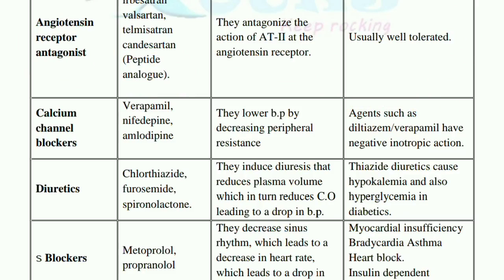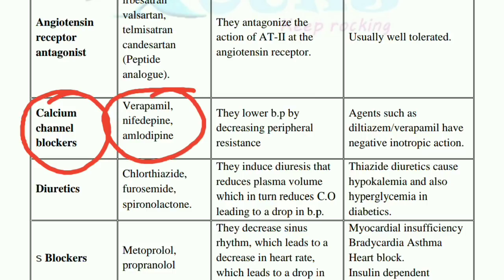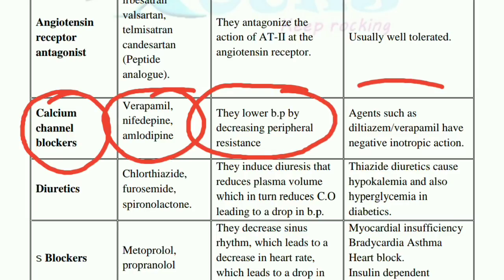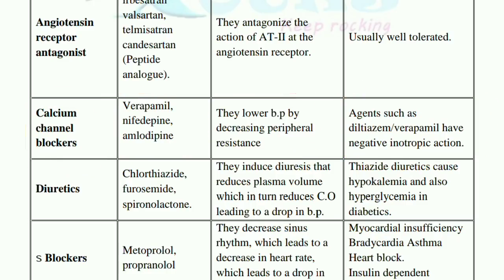Next is the calcium channel blockers, also called CCBs. They include verapamil, nifedipine, and amlodipine. They lower the blood pressure by decreasing peripheral resistance. Their side effect: agents such as verapamil have a negative inotropic action. So if a question asks which drug has a negative inotropic action, the answer is calcium channel blockers.